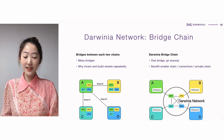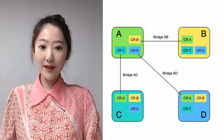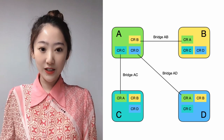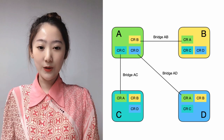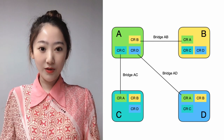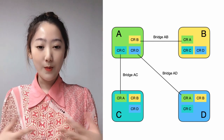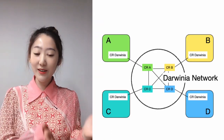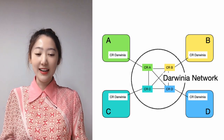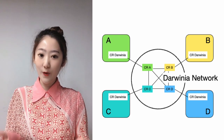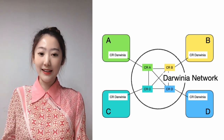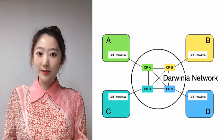Darwinia Network is a bridge chain — it serves as a transit station. In the model on the left, direct bridges need to be established between every two chains. For example, chain A needs to establish three bridges and six chain relays to the three destinations to achieve the goal of moving assets to each destination. In the right model, each chain just needs to connect to Darwinia Network, which serves as a bridge chain. It can forward and route your asset to any connected chain. This saves repeated work and also greatly benefits smaller chains.